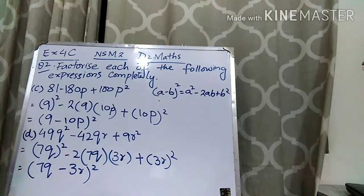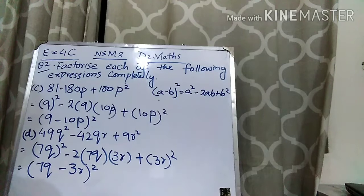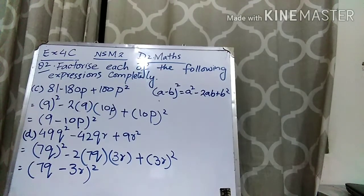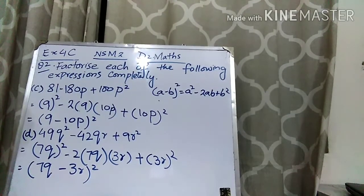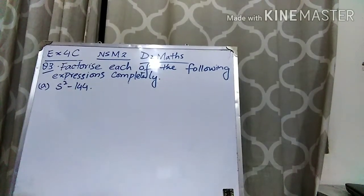This is equal to A minus B whole squared. So your answer is 7Q minus 3R, whole squared. I hope that this concept is clear to you. Now let's move forward to question number 3, which is: factorize each of the following expressions completely.